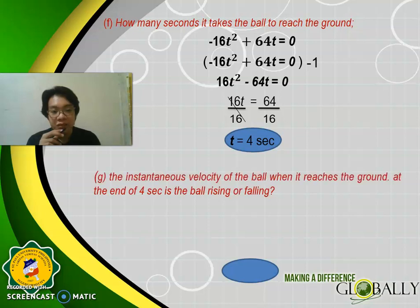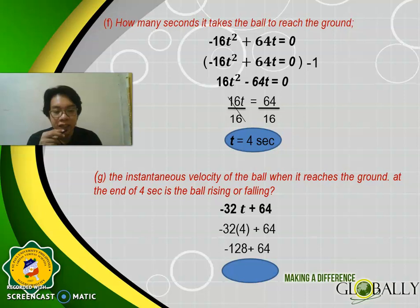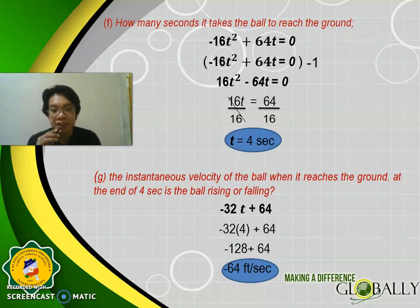For part G — the instantaneous velocity when the ball reaches the ground at the end of 4 seconds, and is the ball rising or falling? Use the derivative: dS/dT = −32T + 64. Substitute T = 4: −32(4) + 64 = −128 + 64 = −64 feet per second. Therefore, when the ball reaches the ground, its instantaneous velocity is −64 feet per second. Since the value is negative, the ball is falling.